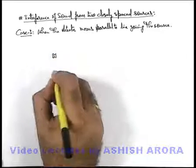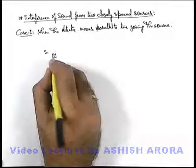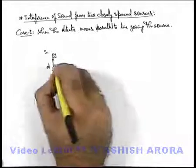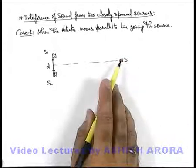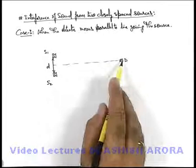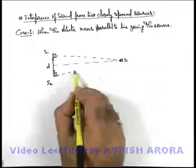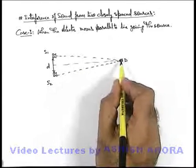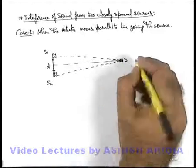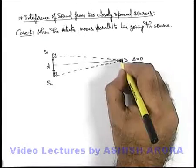Let us first analyze the situation. Say these are two sound sources S1 and S2, which are separated by a close separation, small d. From the two sources, a large distance away, we place a detector D. If the detector is placed exactly on the perpendicular bisector, the waves from the sources will cover equal path lengths before reaching the detector. When the waves superpose at the location of the detector, the path difference will be zero, implying constructive interference will take place here.